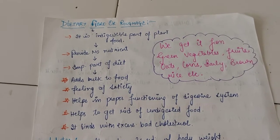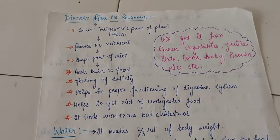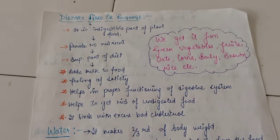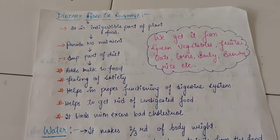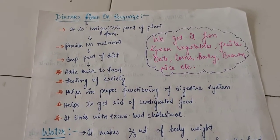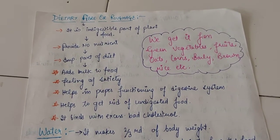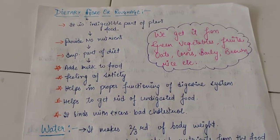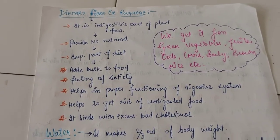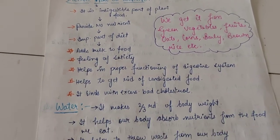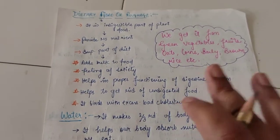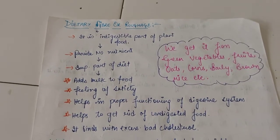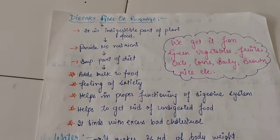A very happy morning to all of you students. Today we are going to do the second part of the chapter on dietary fiber or roughage. The chapter we are doing is 'Components of Food,' and we have covered the five major components of food.